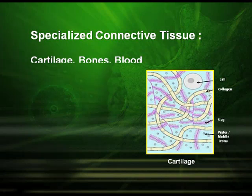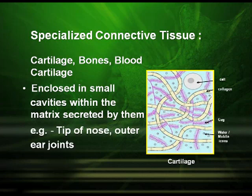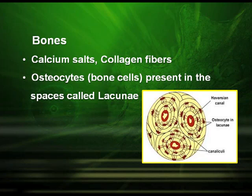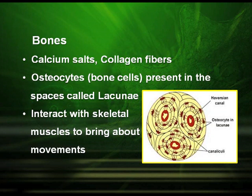Specialized connective tissue includes cartilage, bones, and blood. Cartilage tissues are enclosed in small cavities within the matrix secreted by them, and are found in the tip of the nose and external ear. Bones are made up of calcium salts and collagen fibers, with bone cells known as osteocytes present in spaces called lacunae. They interact with skeletal muscles to bring about movement, and the bone marrow is the site of blood cell production. Their function is to give structural frame to the body and protect softer tissues.